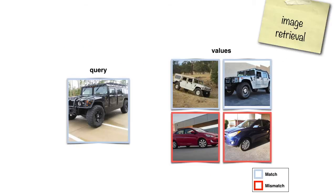We focus on the image retrieval task, which involves querying a set of images with another image to find similar items. In this example, we're looking for cars that have the same make and model as the car in the query image.